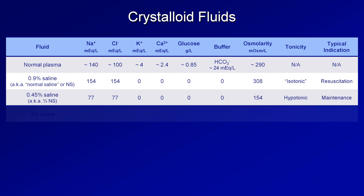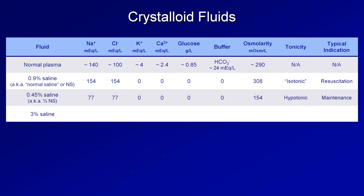Yet another crystalloid is 3% saline, which contains 513 mEq/L of both sodium and chloride, and still no potassium, calcium, glucose, or buffer. 3% saline is dramatically hypertonic. Although you might predict such a hypertonic fluid might be great for rapid intravascular volume expansion in shock, it is rarely used for this indication, and is more often used to manage severe and life-threatening hyponatremia, in which it can rapidly increase plasma osmolarity.